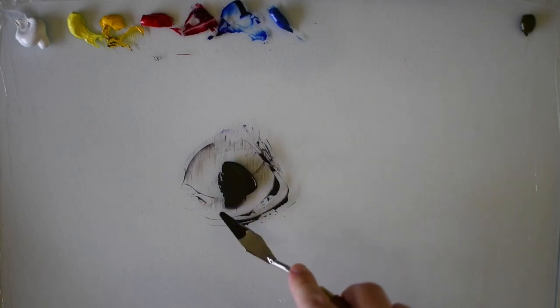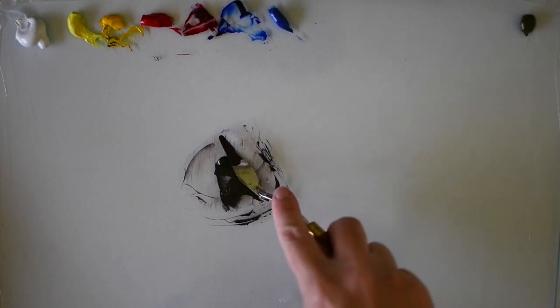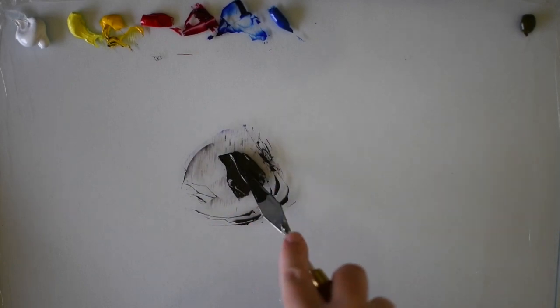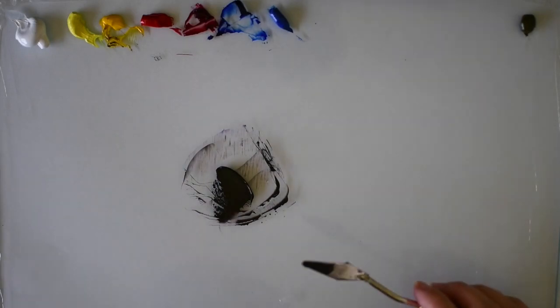I prefer this method rather than using black out of the tube, as it seems to be very flat in my paintings if I use black from the tube. This way I can get the right shades, the black that I want.